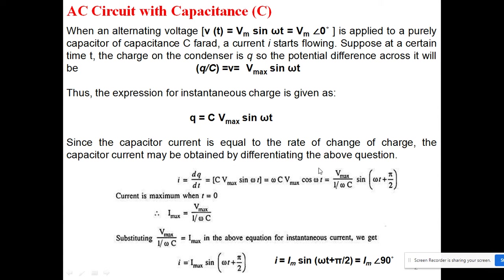We differentiate this equation and we get this expression. This is cos(ωt), which we convert to sine by adding π/2, and the maximum current I_max becomes equal to this. So my current is represented as I = I_max sin(ωt + π/2). From this equation and our applied voltage equation, we can see this is our applied voltage and this is the current flowing through the condenser.